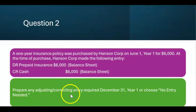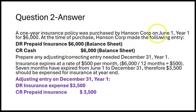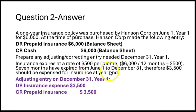Question two asks: prepare any adjusting or correcting entry required December 31st, year one, or choose no entry needed. The entry made on June 1st was proper, so there was no error made. But there is going to be an adjusting entry needed December 31st, because the prepaid insurance account is at $6,000 as of June 1st and will still be $6,000 on December 31st if we don't adjust it. Insurance expires at a rate of $500 a month — $6,000 divided by 12 months — and seven months have expired from June 1st to December 31st.